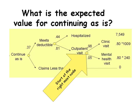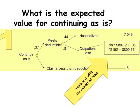To fold back this decision tree, you start at the rightmost node and replace the node with its expected value. In this case, there is a 0.98 chance of having a cost of $807, plus a 0.05 chance of having a cost of $192. The total expected cost of this node is $866. That's the expected cost of outpatient visits under continuing as is.